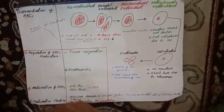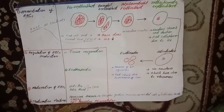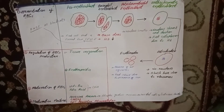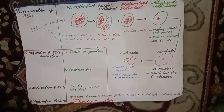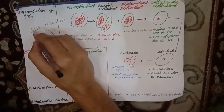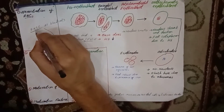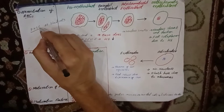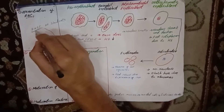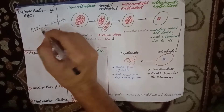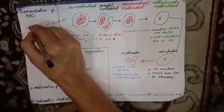In my previous lecture, we discussed how various types of blood cells are formed from a single hematopoietic stem cell — the pluripotent hematopoietic stem cell — which is present in the red bone marrow.